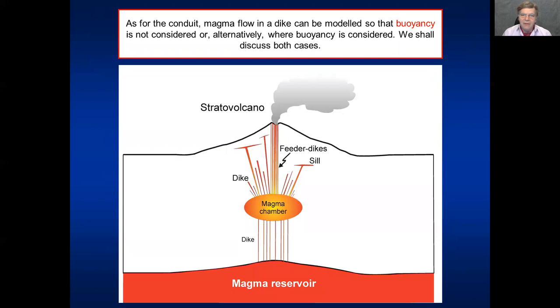So for the conduit, magma flow can be modeled so that it is using buoyancy or ignoring buoyancy. And the same applies to dikes and inclined sheets. We can use buoyancy or we can ignore buoyancy. Both have been used quite a bit over the years, so I'll show you both cases. Yes, there's a little bit of equations here, a little bit of physics, but I will show you in the webinar how to use this and it's not really difficult at all.